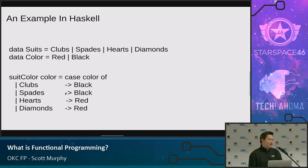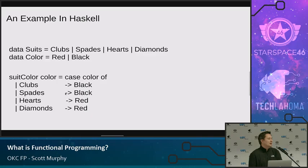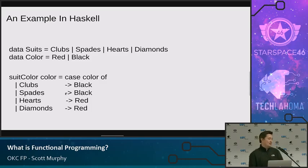That might seem like a little thing, but the fact that you have completely bound your input and your output means you never have to worry about that being wrong. You can imagine taking this and adding more complexity — maybe it's a club with a number and a spade with a string — but in each case you can work through the same sort of idea and be very sure that part of your program is correct. There's no way side effects can happen. There's nothing that can mutate something else.